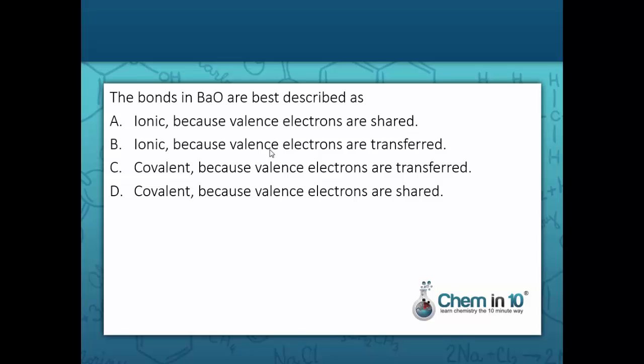The bonds in barium oxide are best described as: A, ionic because valence electrons are shared; B, ionic because valence electrons are transferred; C, covalent because valence electrons are transferred; or D, covalent because valence electrons are shared.